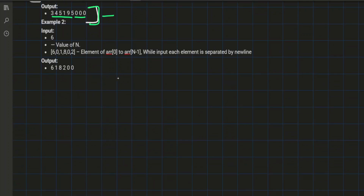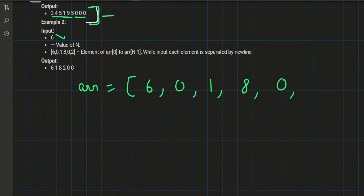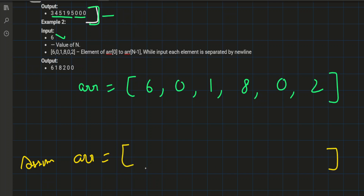Let's take a small example with an array of size 6, where the values are 6, 0, 1, 8, 0, 2. This problem is based on in-place ordering — that means we don't have any extra space to store the non-zero values. We need to separate all the values within the same array. We assume the same array as an empty array, meaning we have 6 places where all the places are empty.